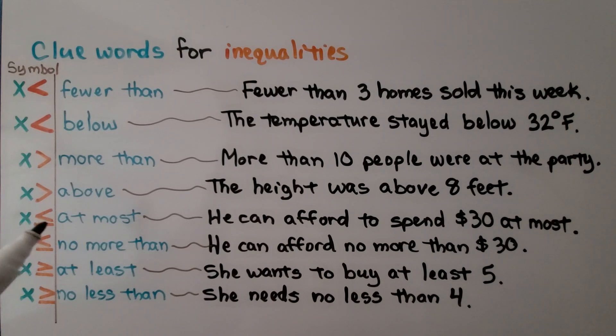Our variable and less than or equal to if it says at most. He can afford to spend $30 at most. That means it can't go any higher than that, but it could be lower or equal. We have our variable and less than or equal to if it says no more than. He can afford no more than $30. We have our variable and greater than or equal to if it says at least. She wants to buy at least five. That means she might want to buy six or seven. So it could be greater than or equal to five. And we have our variable and greater than or equal to if it says no less than. She needs no less than four. That means it could be greater than four. It could be equal to four.